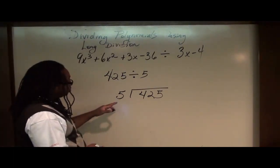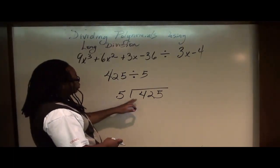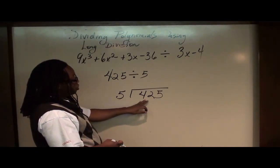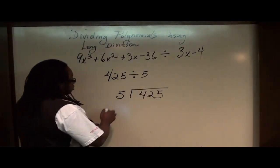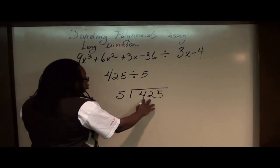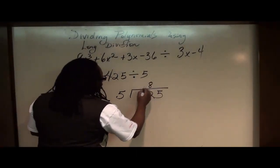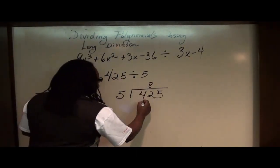Let me give you an example. 5 goes into 42, or 5 goes into 4 is 0 times, so you can't put anything over the 4. But 5 goes into 42 eight times, and so 5 times 8 is 40.